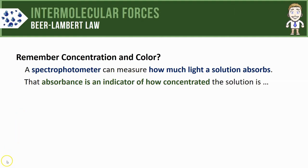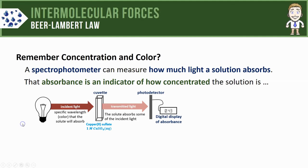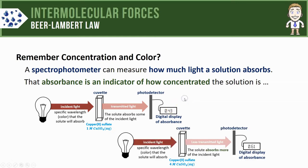of how concentrated the solution is. For example, if we tested a 1M copper sulfate solution, we might get an absorbance around 0.43. If we do the same test with a 4M copper sulfate solution, we would get a higher absorbance of 0.61 because there are more solute particles absorbing more light in the 4M solution.